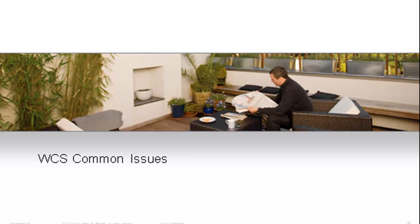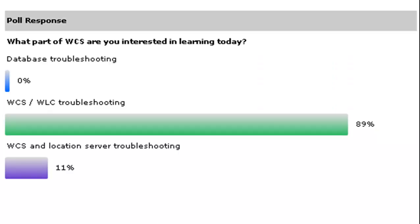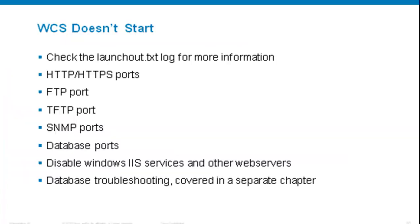Now let's talk about WCS common issues — the things you may see most frequently in the field. If WCS doesn't start, begin with launchout.txt — open this file and look for more information. Usually when WCS doesn't start, it's mainly related to port issues: some ports may not be open. It could also be an Apache Tomcat or database issue. Make sure that on Windows, IIS services and other web servers are disabled.